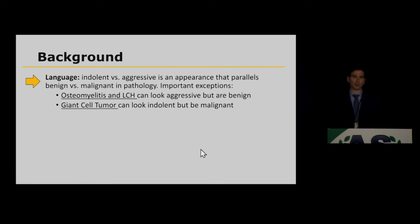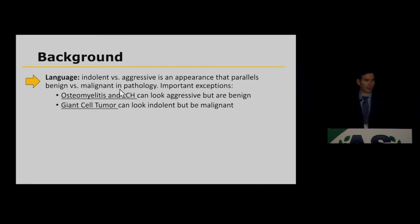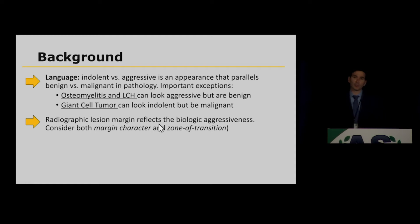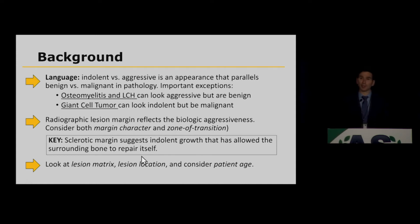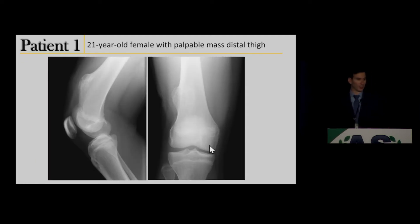Some brief background on terminology: we describe bone lesions as indolent or aggressive, which parallels benign versus malignant in pathology, with some important exceptions. Osteomyelitis and Langerhans cell histiocytosis can look aggressive but are benign, and giant cell tumor can look indolent but can be malignant. Radiographic lesion margination reflects biologic aggressiveness. Look at margin character, the zone of transition — wide or narrow — and note that a sclerotic margin suggests indolent growth. Also assess the lesion matrix, location within the long axis and cross-section, and patient age.